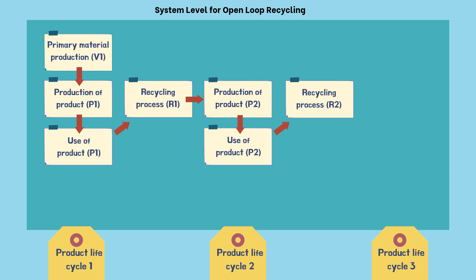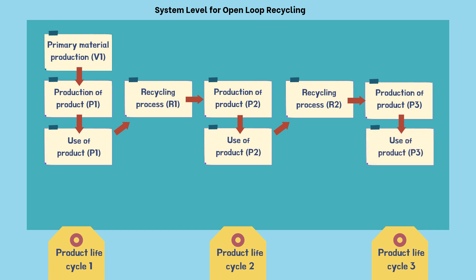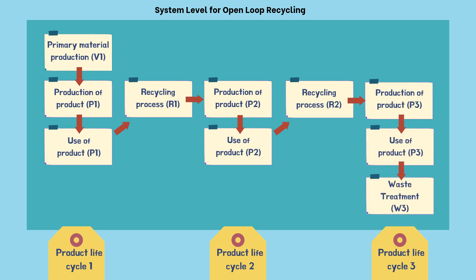Lastly, for Product Life Cycle 3, the production of product P3 uses the product from R2, and it is used in product P3 before being processed in the waste treatment R3.